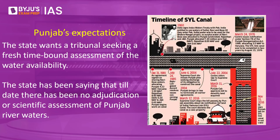Interestingly, Punjab is not saying it will give no water to Haryana — rather, it demands that a new tribunal be set up. Punjab argues that the 1970s and 1980s agreements are outdated because the volume of water in the rivers has significantly reduced since then, making Haryana's demands unreasonable. Punjab wants a scientific assessment of available water first, and only after that should any decision on transferring excess water be made. But this has not happened yet.